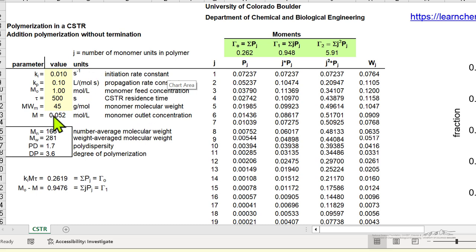It calculates the concentration of monomer in the reactor, which is also the concentration leaving the reactor, and then calculates the number average, weight average molecular weight, polydispersity, and degree of polymerization.